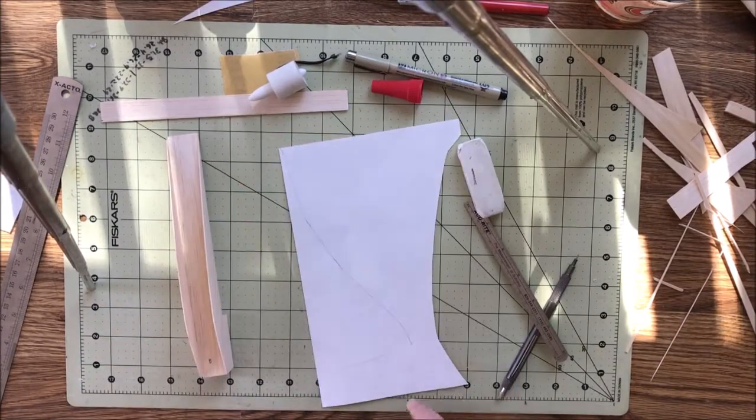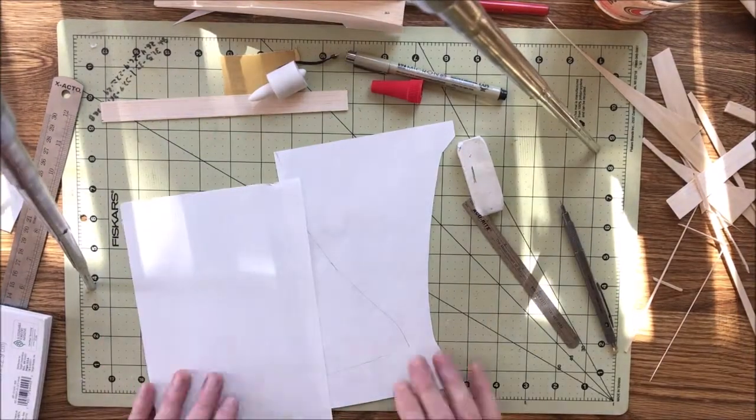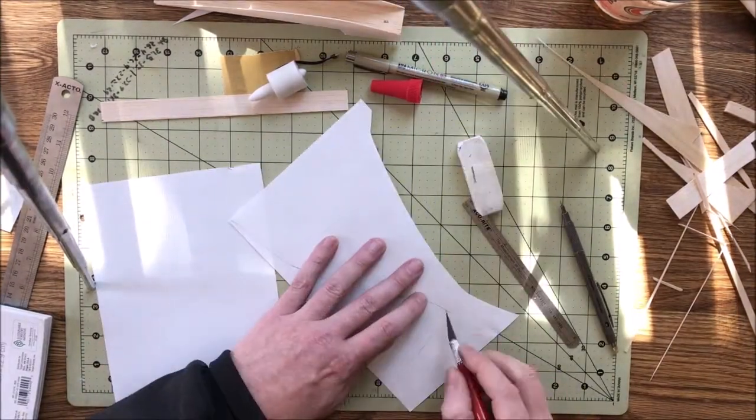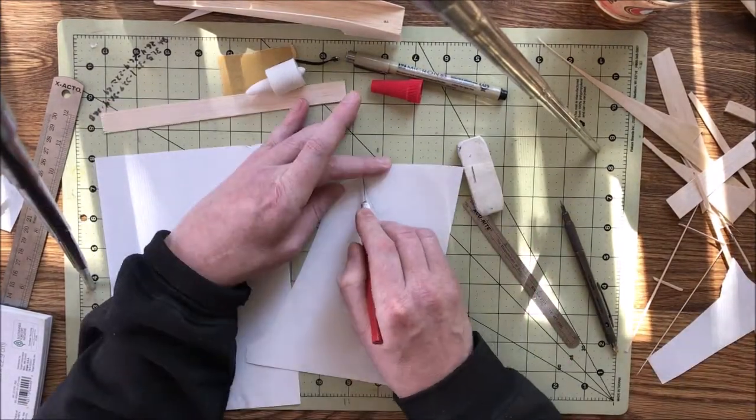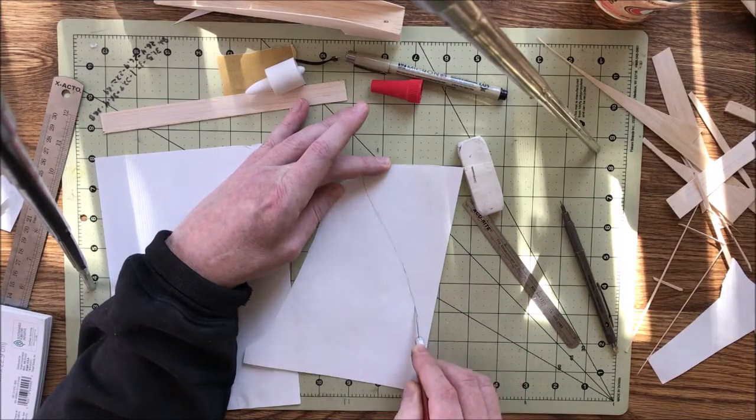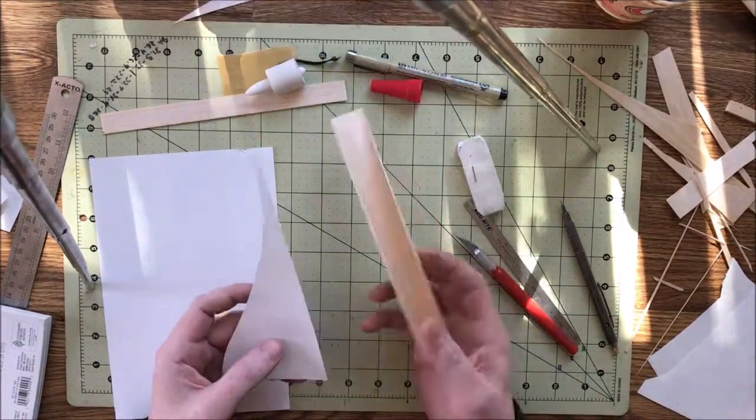Basically, just figure out the general shape that I want and cut that out, and then I use that as a template to make a copy. Then I adjust that copy to a new version. It's like Ctrl-C, Ctrl-P in real life.